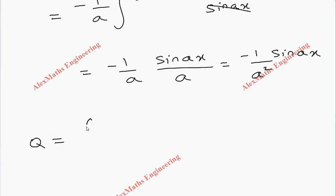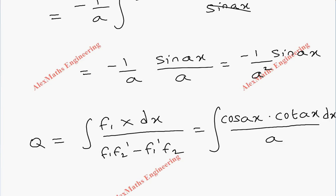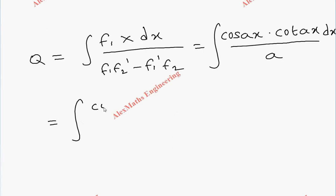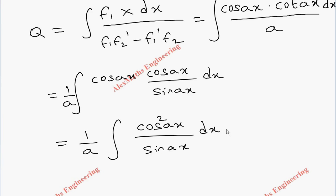Now coming to Q: Q is integral of f1 into X dx, whole divided by the Wronskian. So f1 is cos(ax), capital X is cot(ax), dx whole divided by a. Rewriting cot as cos(ax)/sin(ax), and placing 1/a outside, we get 1/a times the integral of cos²(ax) divided by sin(ax) dx. The numerator cos²(ax) can be written as 1 minus sin²(ax).